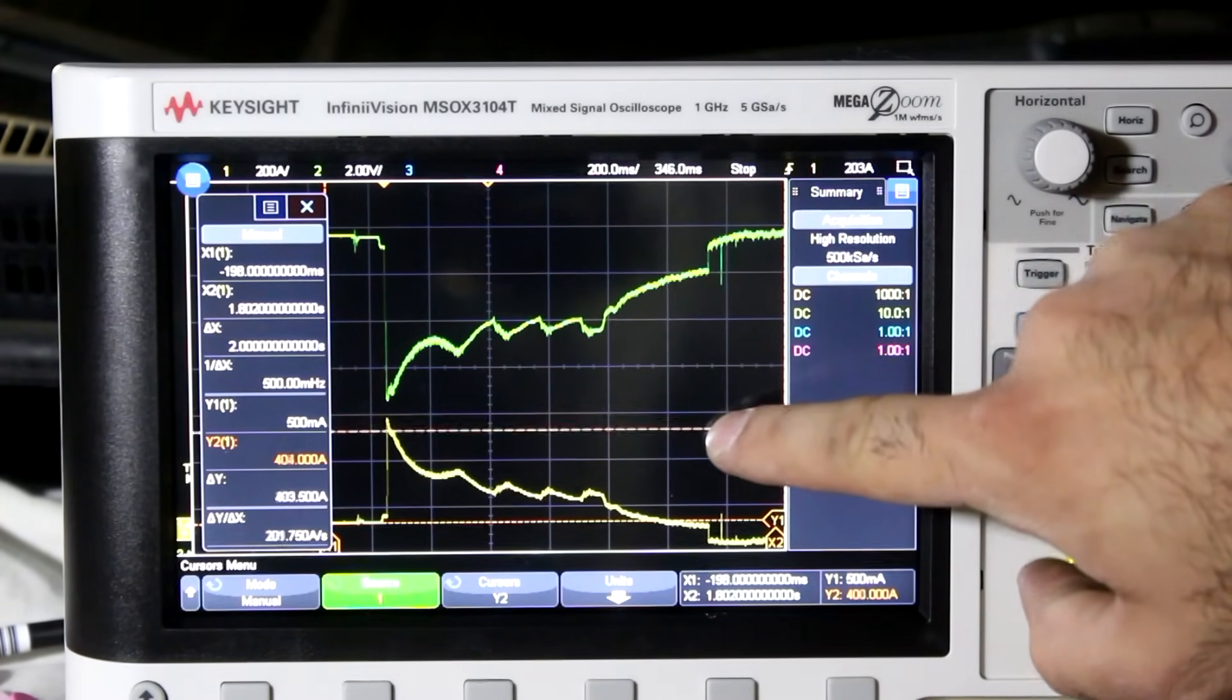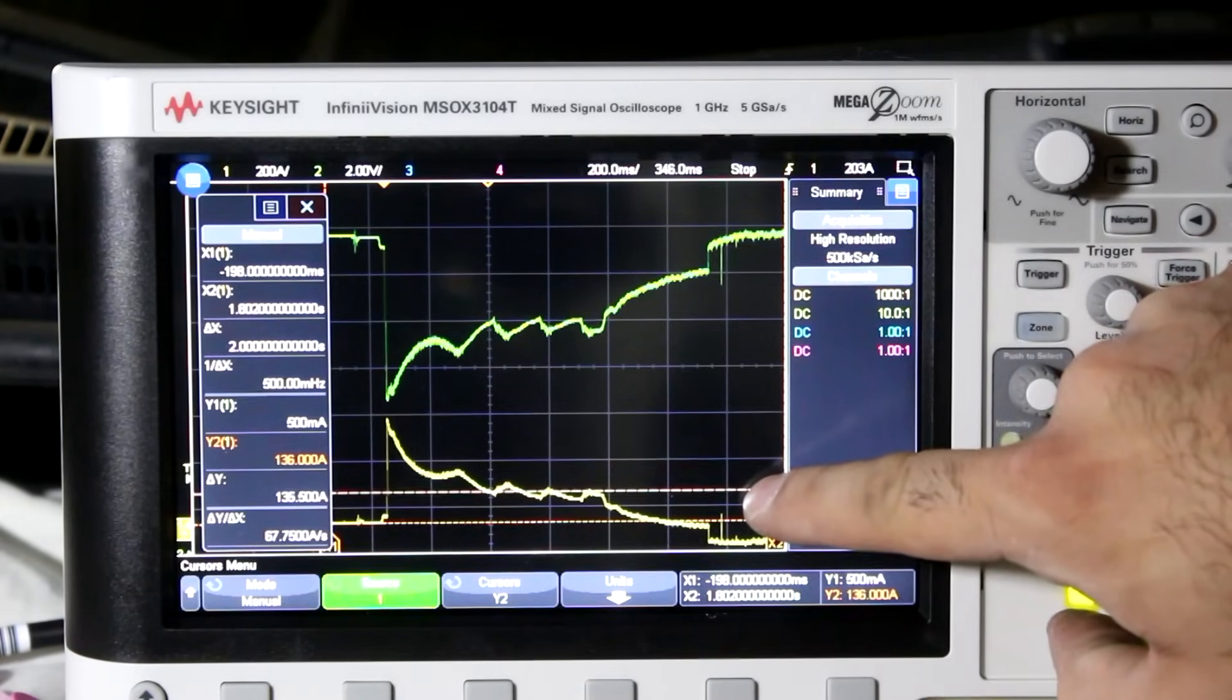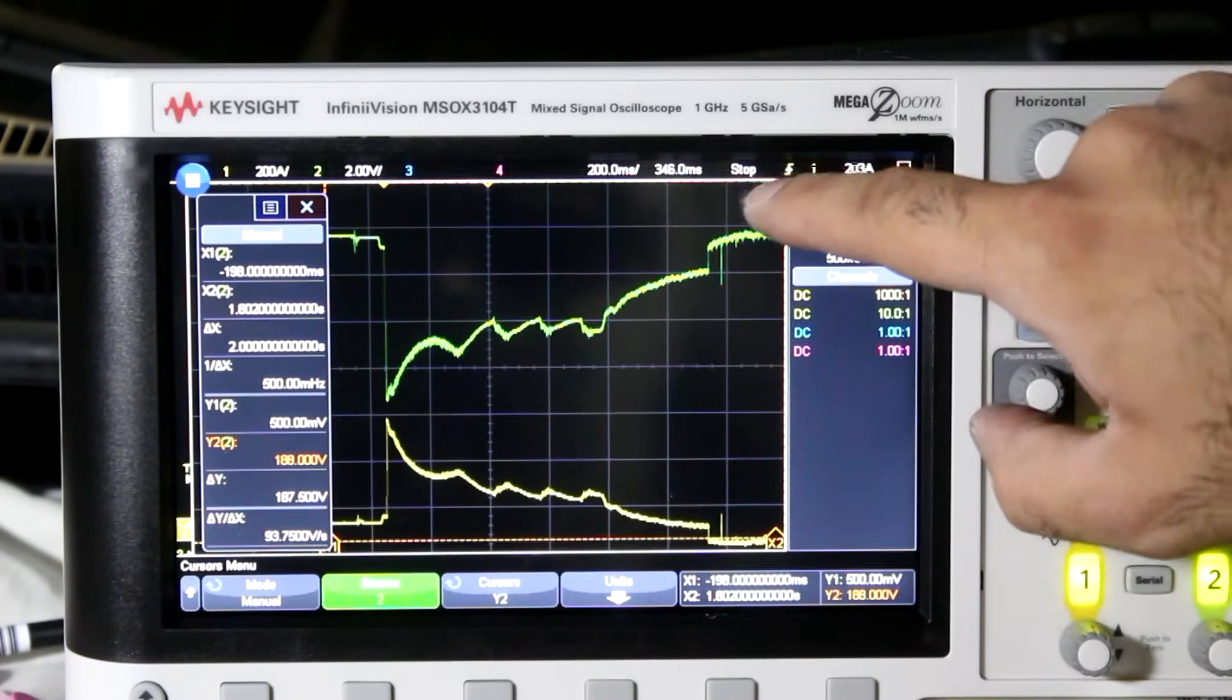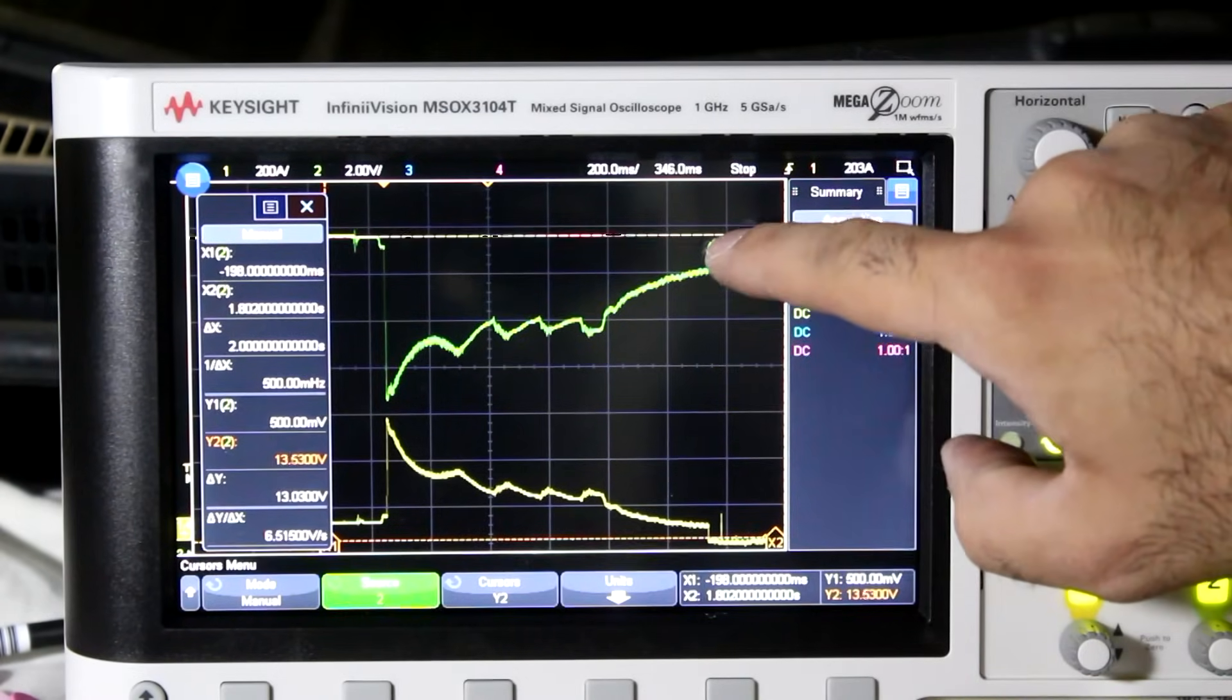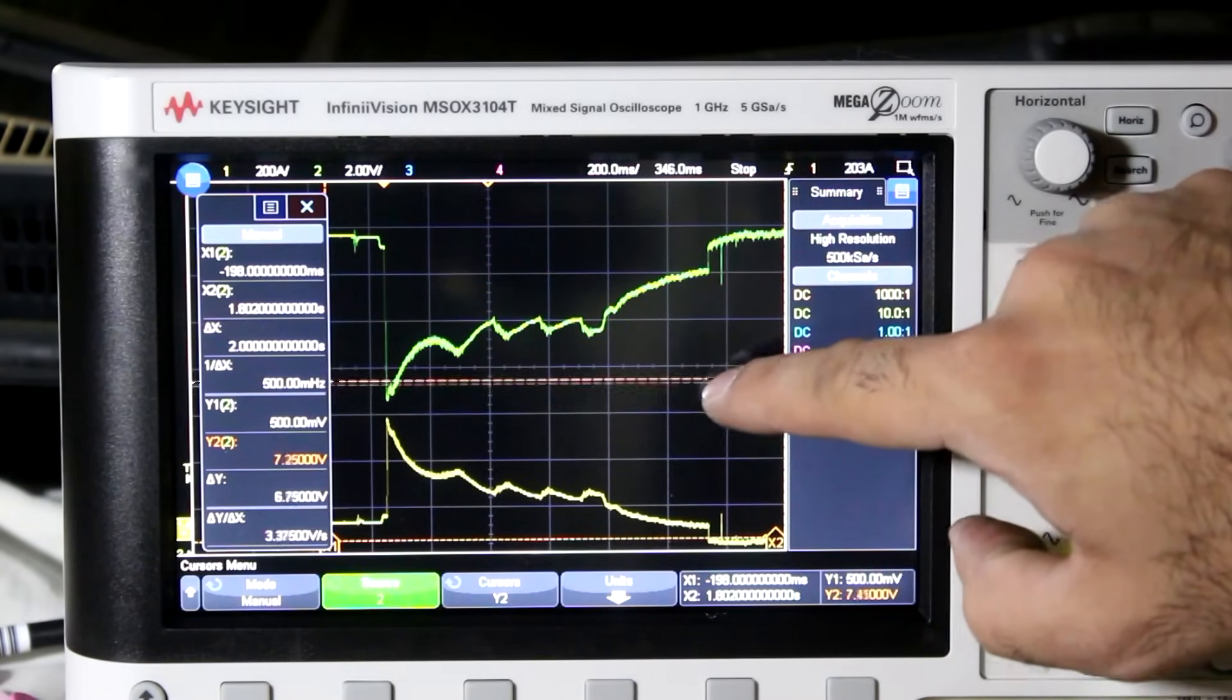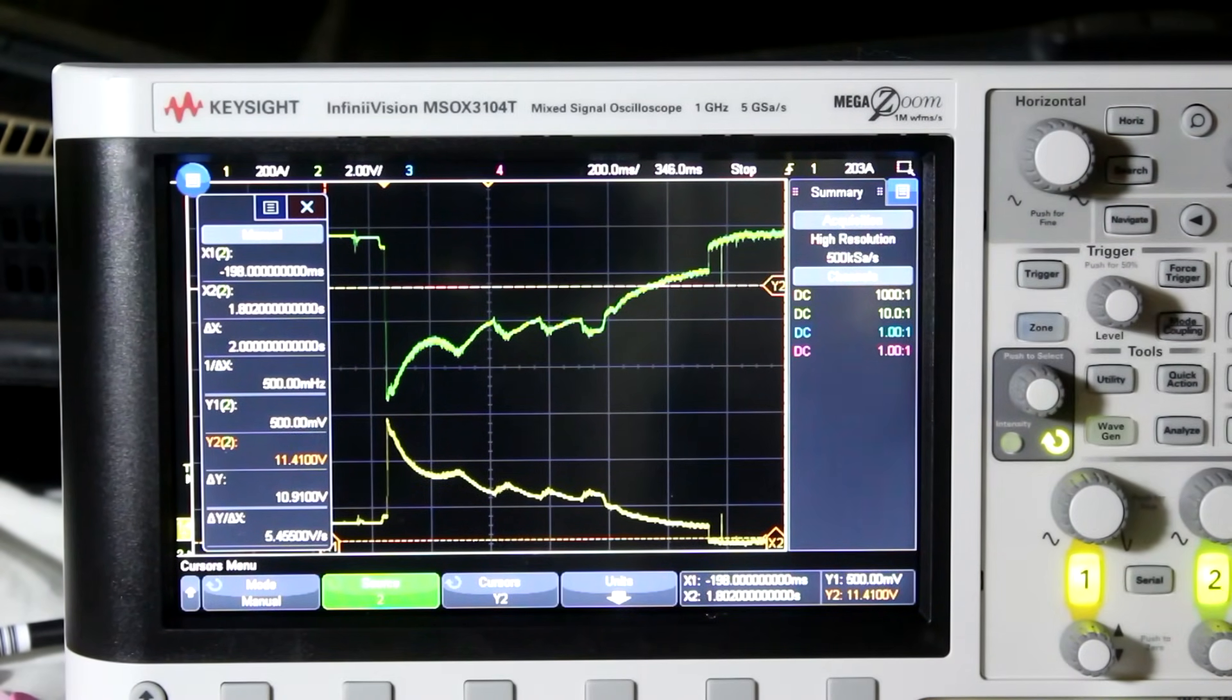As you can see, the current jumps to 450A and then quickly drops to 150A. And also, the voltage drops a lot. You see here that from 14V almost, it drops to around 6V and then goes back up. Of course, it charges quickly back up to 14V as soon as the engine starts going.